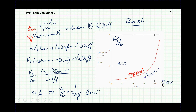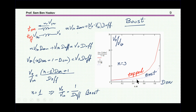For the regular boost, as D_on increases the output voltage rises — the transfer function is 1/(1−D_on), so as D_on approaches 1, V_out goes up. For the tapped inductor boost, we get a different transfer function showing a higher voltage for any given duty cycle compared to the regular boost. So you can actually achieve higher voltages when you use a tapped inductor.